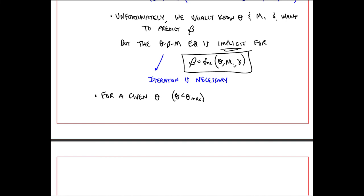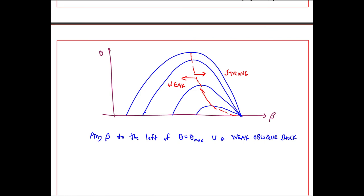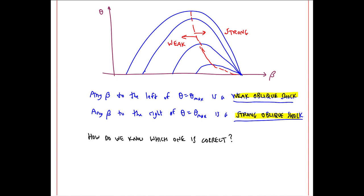To make matters worse, for a given theta, where theta is less than theta max, and Mach number M1, there are two possible betas. On our theta beta M plot, if we have a given theta and some M, suppose we're at 20 degrees theta and M1 is 3, I get a beta there and another beta there, one to the right of theta max and one to the left of theta max. We identify these as the strong oblique shock to the right and the weak oblique shock to the left.